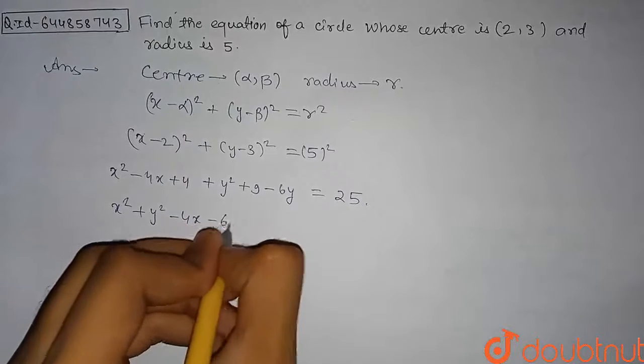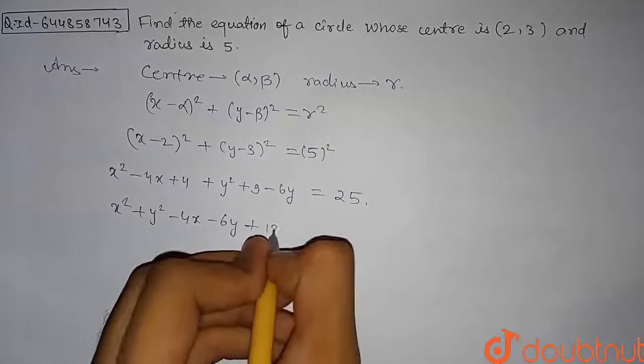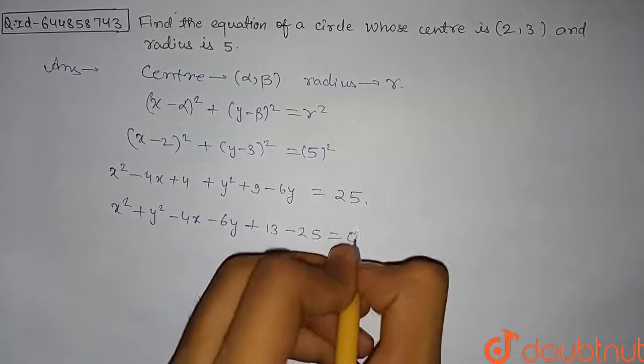And this 4 + 9 that will be equal to 13, and taking this 25 on the left-hand side we get -25 and this will be equal to 0. So from here our circle equation will come out to be...